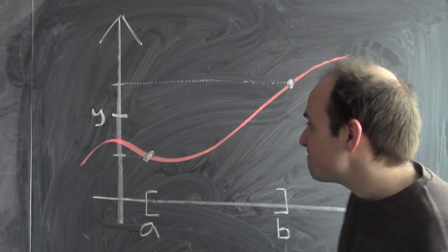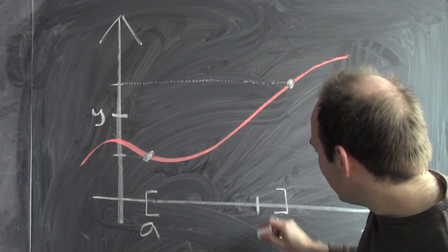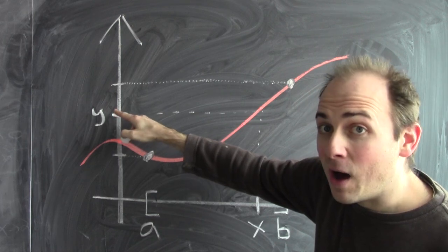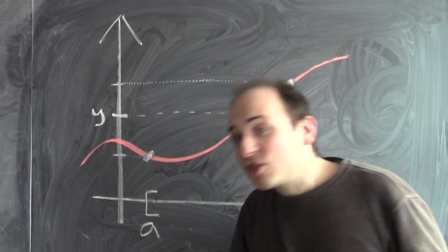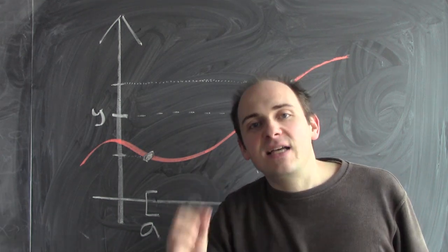Here's the consequence of continuity. There has to be some corresponding input x, so that if I plug in x, I get out y. This is the so-called intermediate value theorem. Let me write down a more precise definition now.